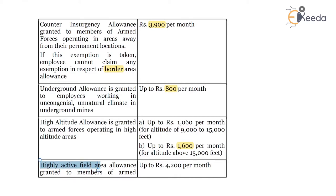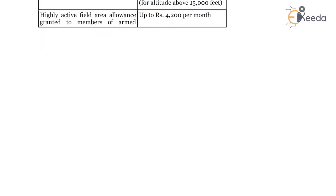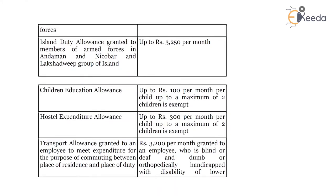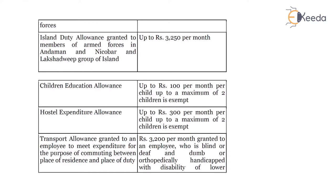Highly active field area allowance, granted to members of armed forces: 4,200 per month. Island duty allowance, granted to members of armed forces in Andaman and Nicobar and Lakshadweep group of islands: up to 3,250 per month.